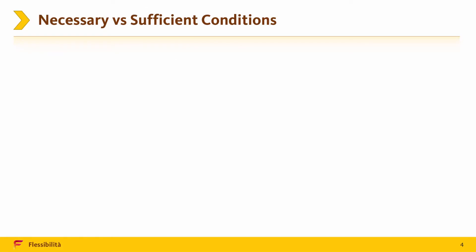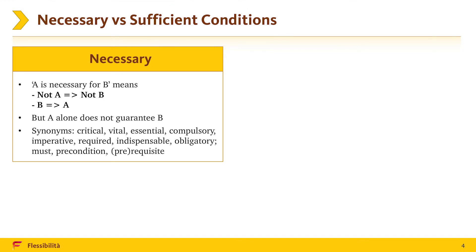Let us have a look at necessary and sufficient conditions in more detail. Necessary conditions: condition A is necessary for condition B means that absence of A results in absence of B. Equivalently, it means that presence of B is possible only if A is present. It does not mean that presence of B results in presence of A, because some other conditions might be necessary. Words such as critical, vital, essential, imperative, obligatory, and so on are indicators of necessary conditions.